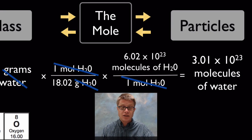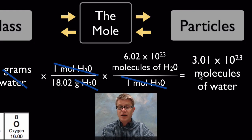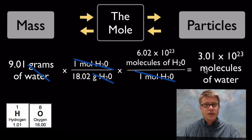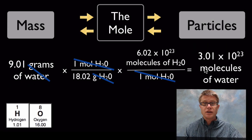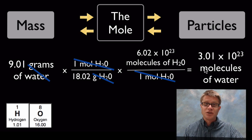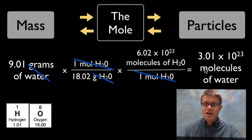The math is straightforward — we take 9.01 divided by 18.02 and multiply by Avogadro's number to get 3.01 times 10 to the 23rd molecules. Just wrap your head around that for a second: two teaspoonfuls of water. The number of water molecules found in there would cover the earth in marbles one and a half miles thick if we converted those molecules to marbles.